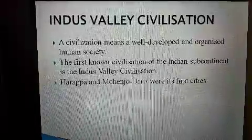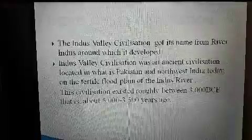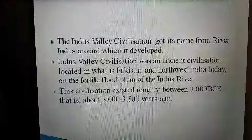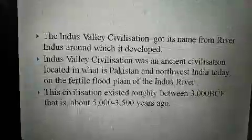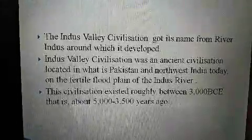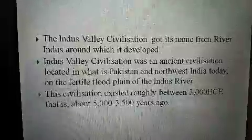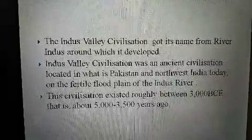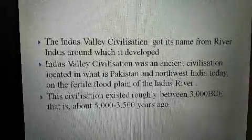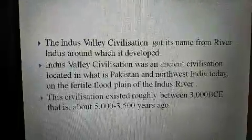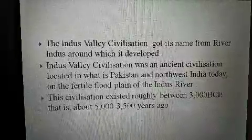Harappa and Mohenjodaro were its first sites which were discovered. The Indus Valley Civilization got its name from the river Indus around which it developed. Indus Valley Civilization was an ancient civilization located in what is Pakistan and northwest India today, on the fertile flood plain of the Indus River. This civilization existed roughly between 3000 BCE, that is about 5000 to 3500 years ago.